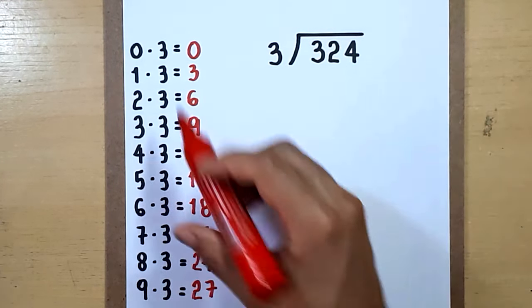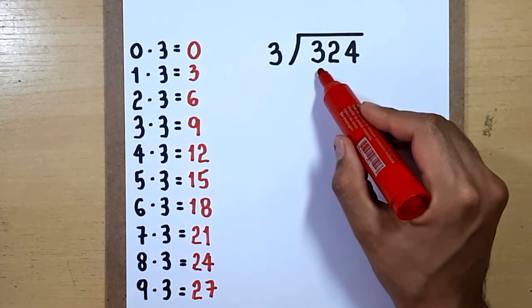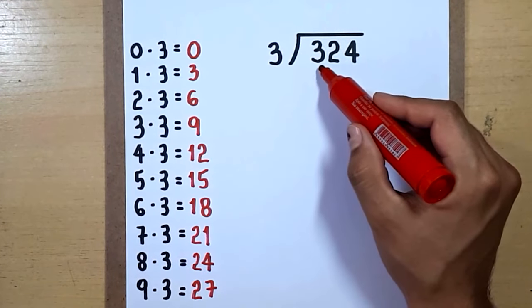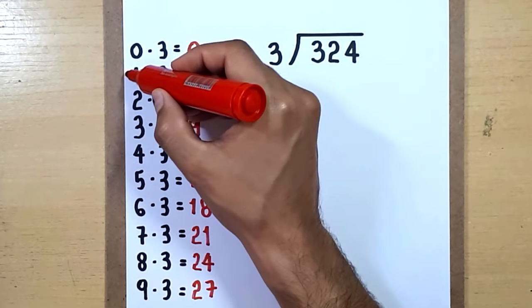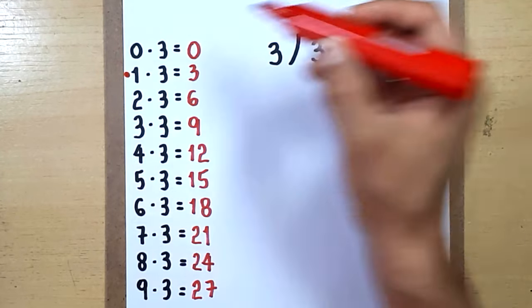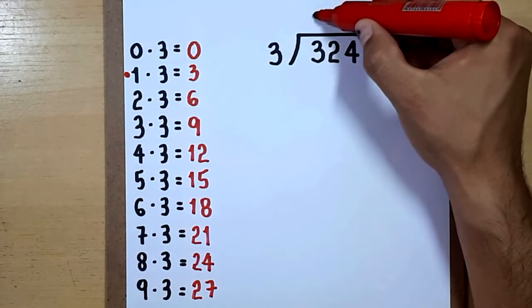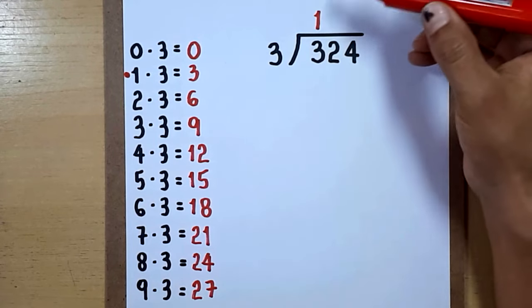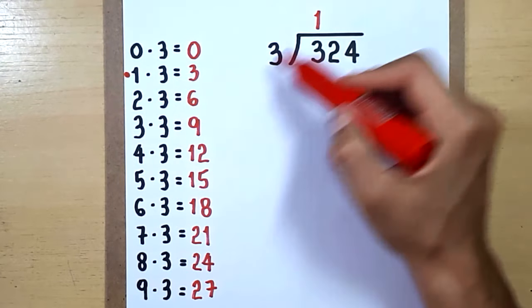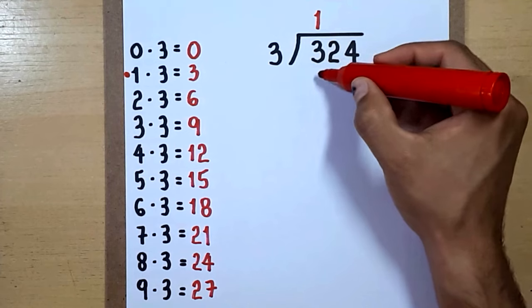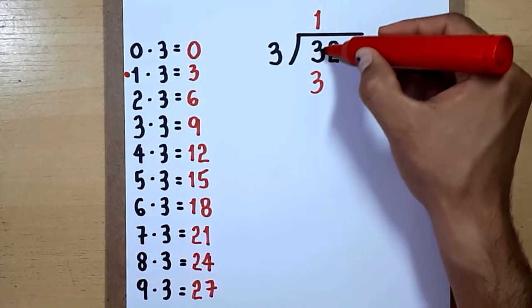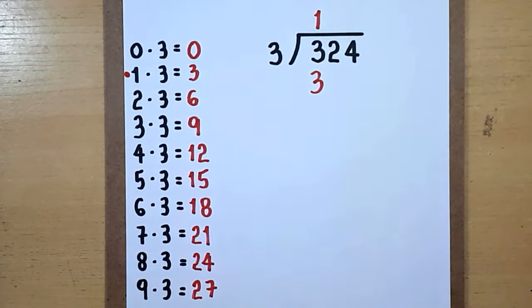What number do you multiply by 3 to get 3 or almost 3? You say it's the number 1. So we write 1 here and since 1 times 3 equals 3, we write 3 below this 3.